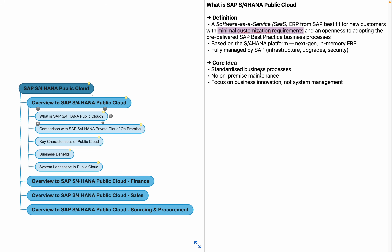In on-premise or private cloud, we can decide which features we want to use, which features we want to customize, and SAP provides the full code. Through ABAP we can write many customizations and create custom objects. But in public cloud there are limitations on customizations, and that is the reason it is best fit only for customers with minimal customization requirements who are open to adopting the pre-delivered SAP best practices.